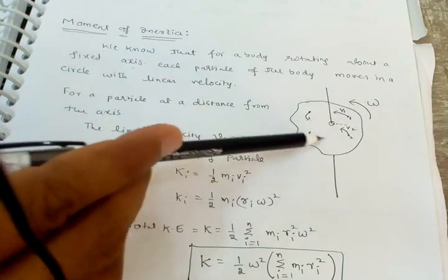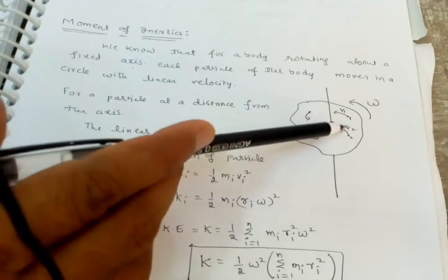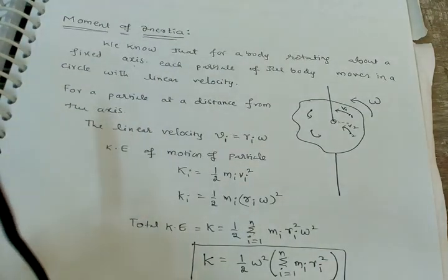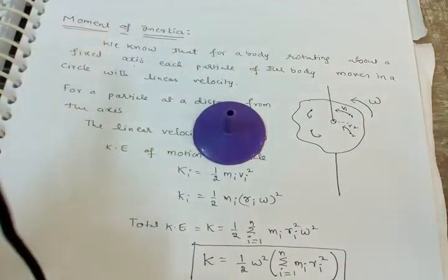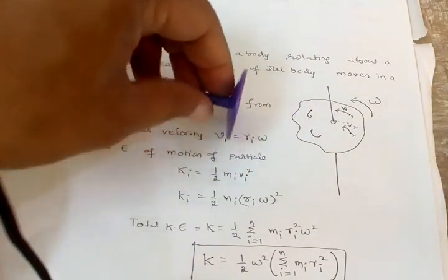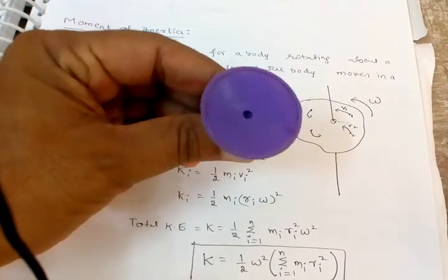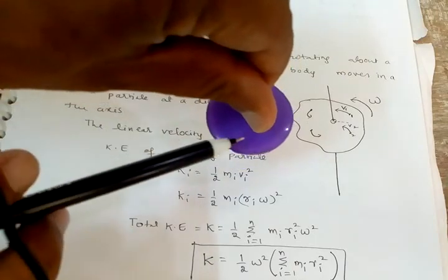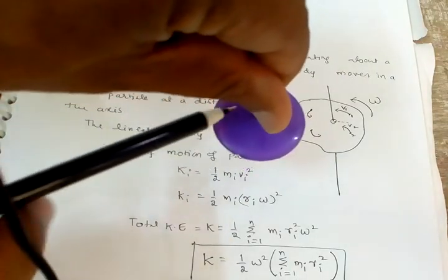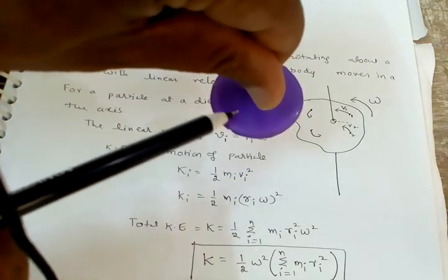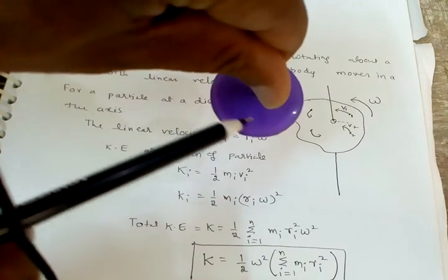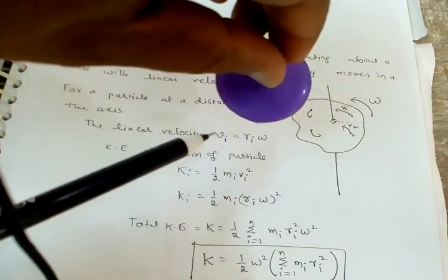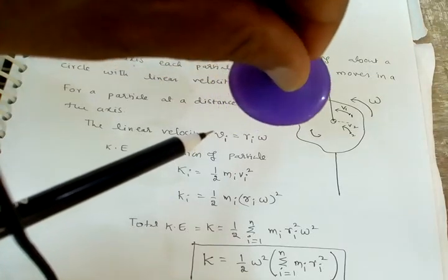The total body is rotating with angular velocity omega. For example, this is a rotational axis and the body is moving. So what is happening here — there are a number of particles, each particle is moving with linear velocity v, and the total body is rotating with angular velocity omega.